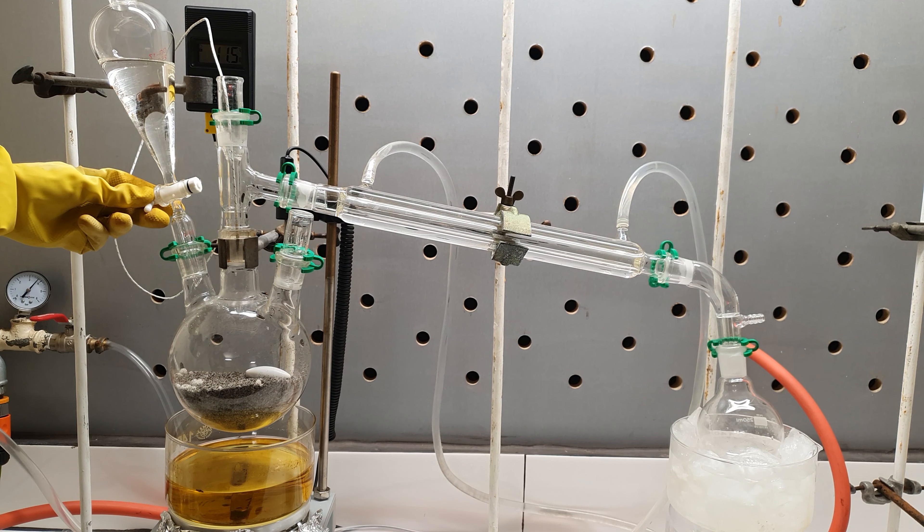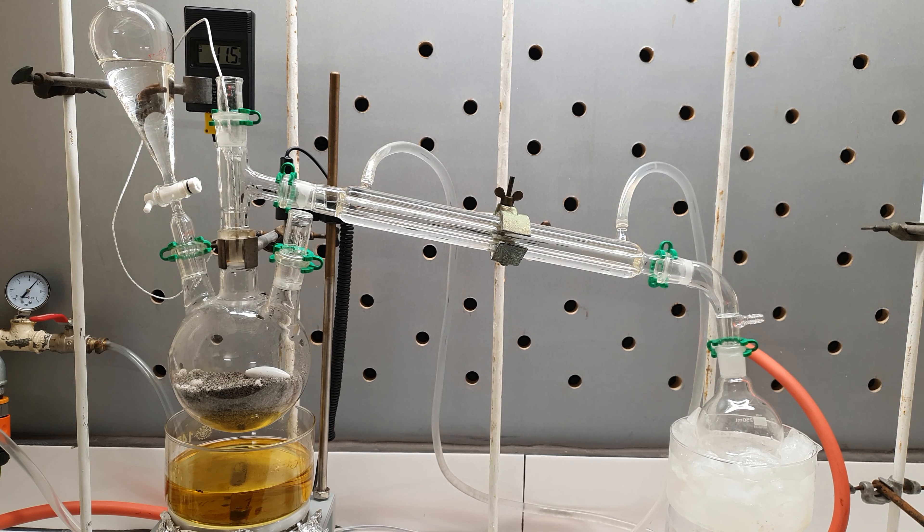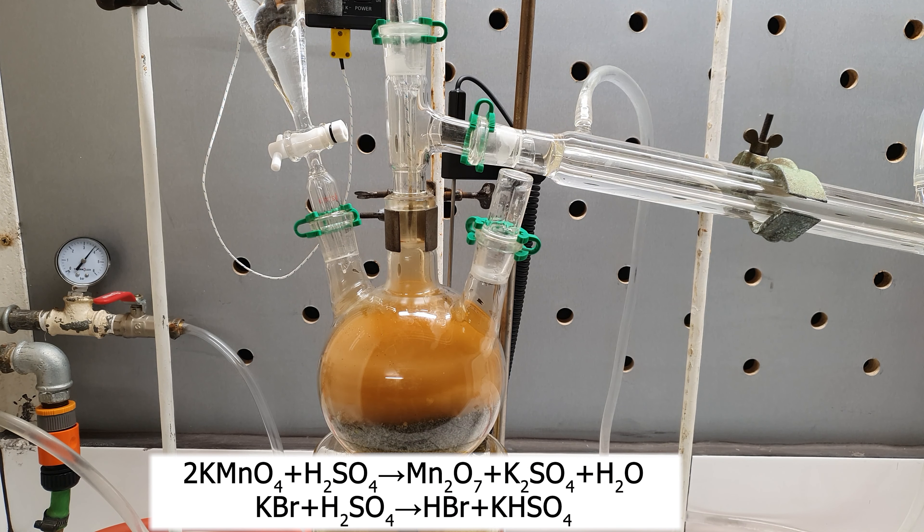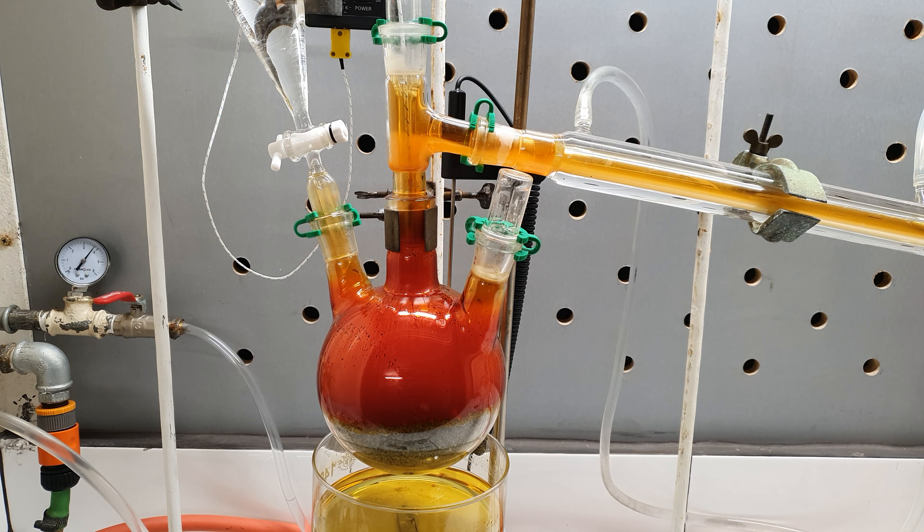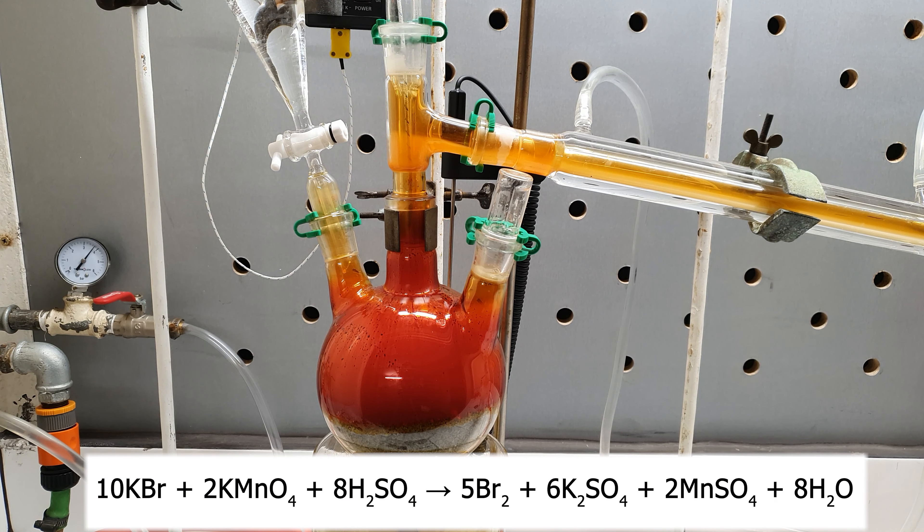When everything was ready, I started adding the sulfuric acid drop wise. Immediately, very thick brown fumes appeared. This is not just bromine, but also some manganese heptoxide from the reaction between sulfuric acid and potassium permanganate, also some hydrogen bromide. Soon enough, the gas phase became more reddish, indicating we are producing bromine.